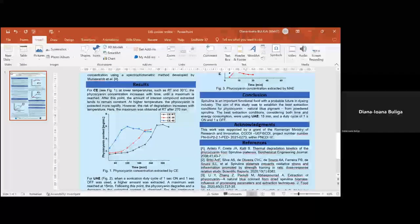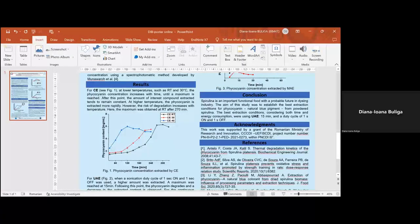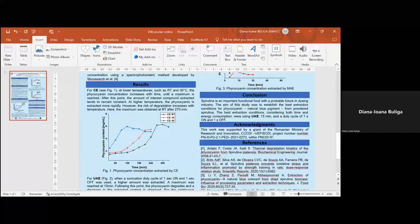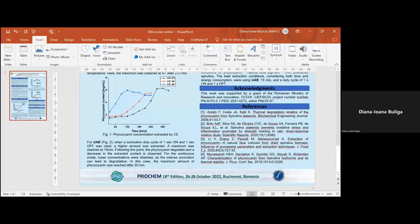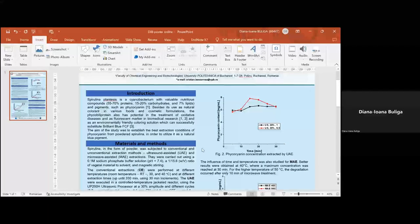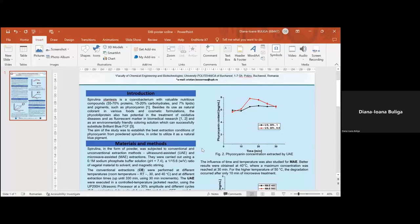Firstly for the conventional extraction, the influence of time and temperature was studied. At lower temperatures such as room temperature and 30 degrees Celsius, the phycocyanin content increases in time until a plateau is reached. At higher temperatures—we here used only 40 degrees Celsius—the phycocyanin is extracted more rapidly but thermal degradation occurs as we can all see in figure one. In this case for conventional extraction the maximum was reached at room temperature after 270 minutes. So I will go here so you can see the graph. Next for ultrasound assisted extraction the influence of time and sonication mode was studied. When a duty cycle of one second on and one second off was used, a higher amount of the targeted compound resulted after 15 minutes. Following this point degradation occurs and the same happens when using continuous mode as intense sonication leads to denaturation of the targeted compound.